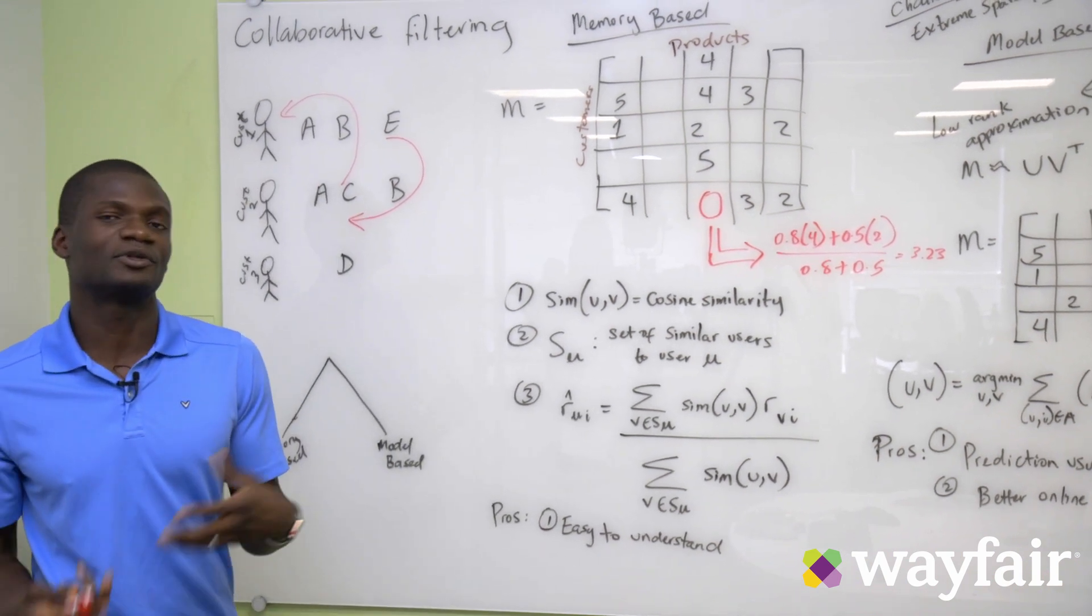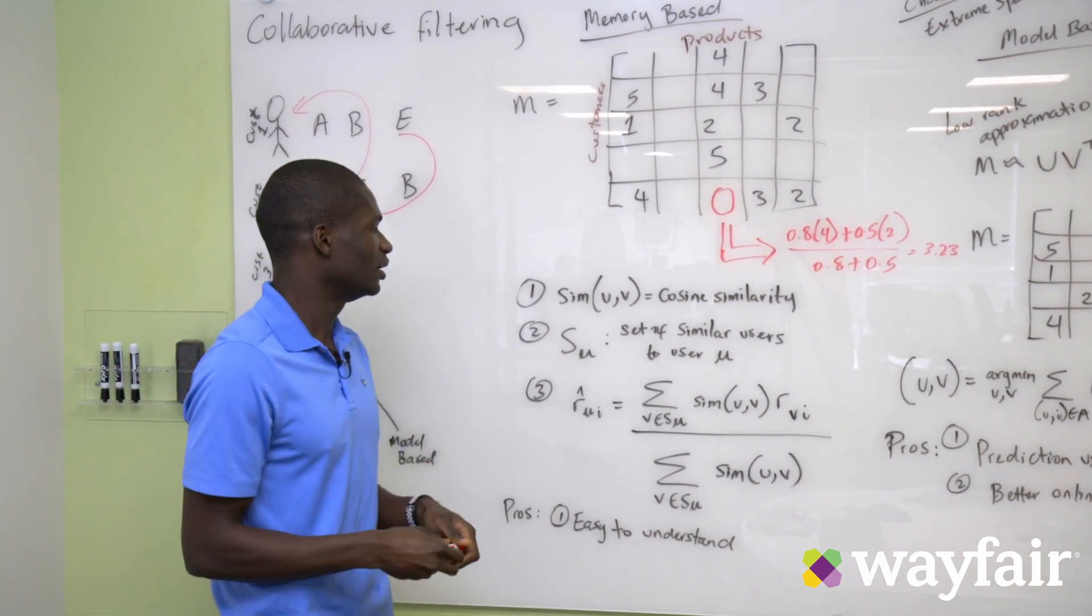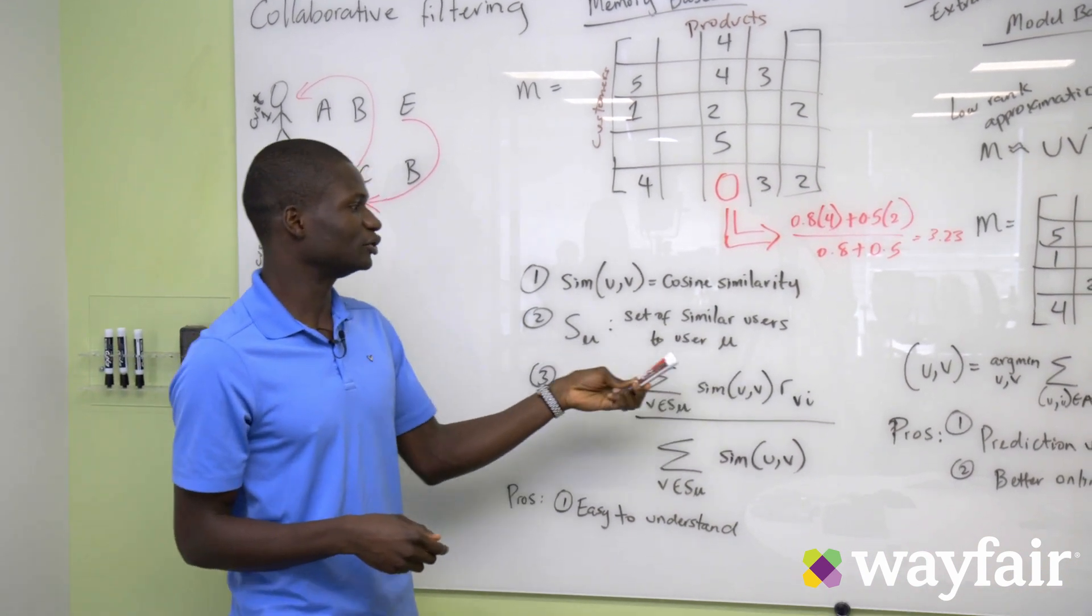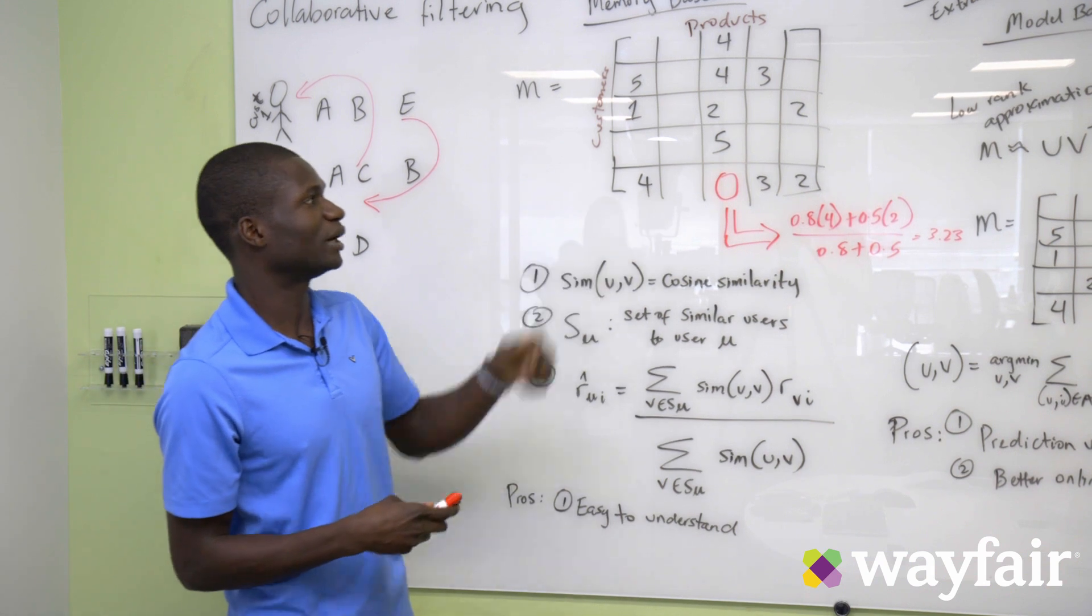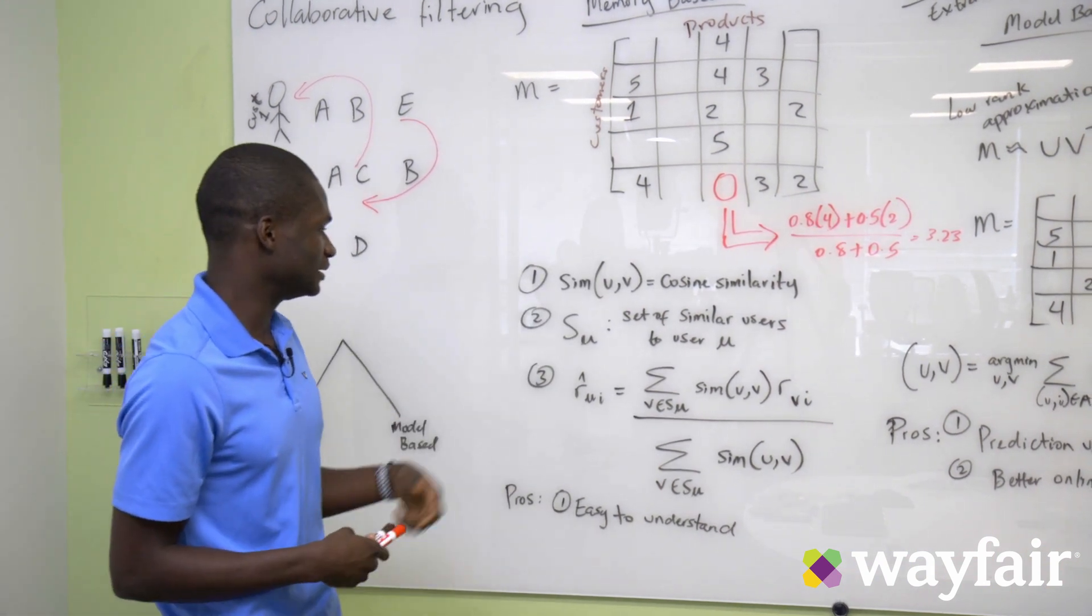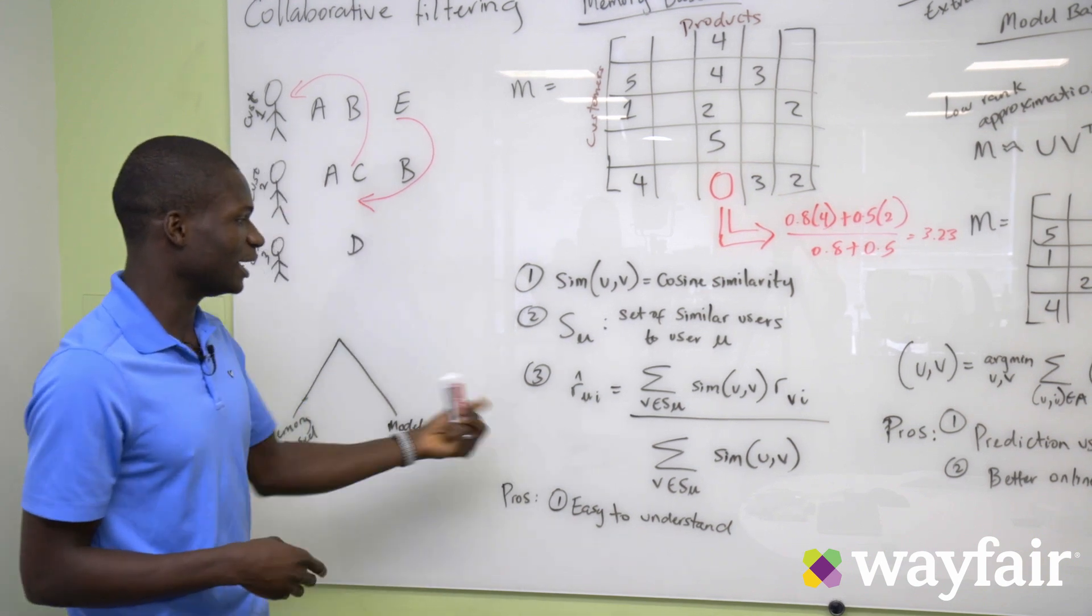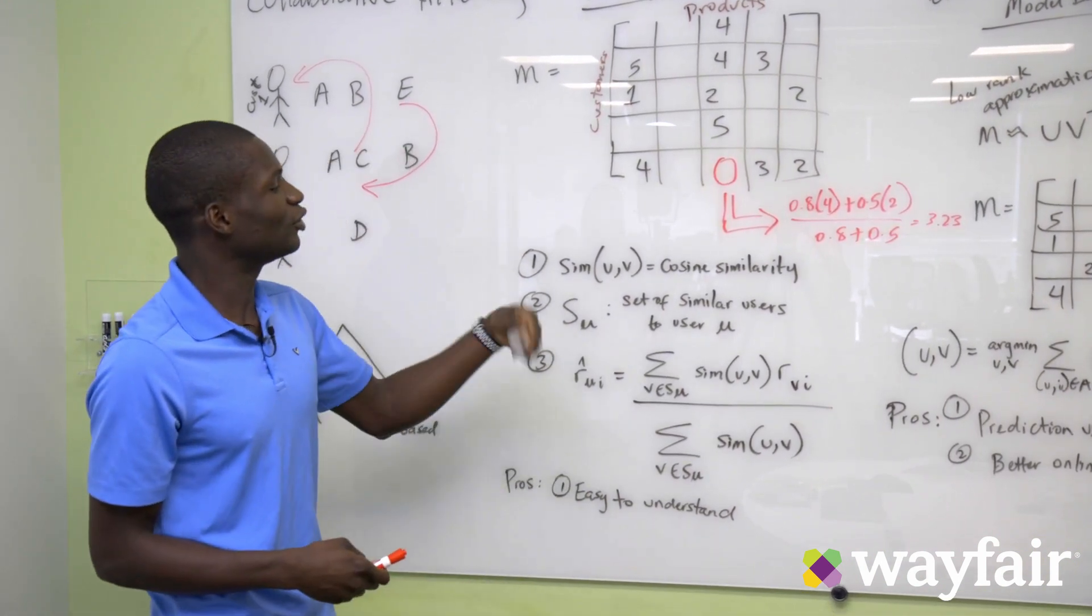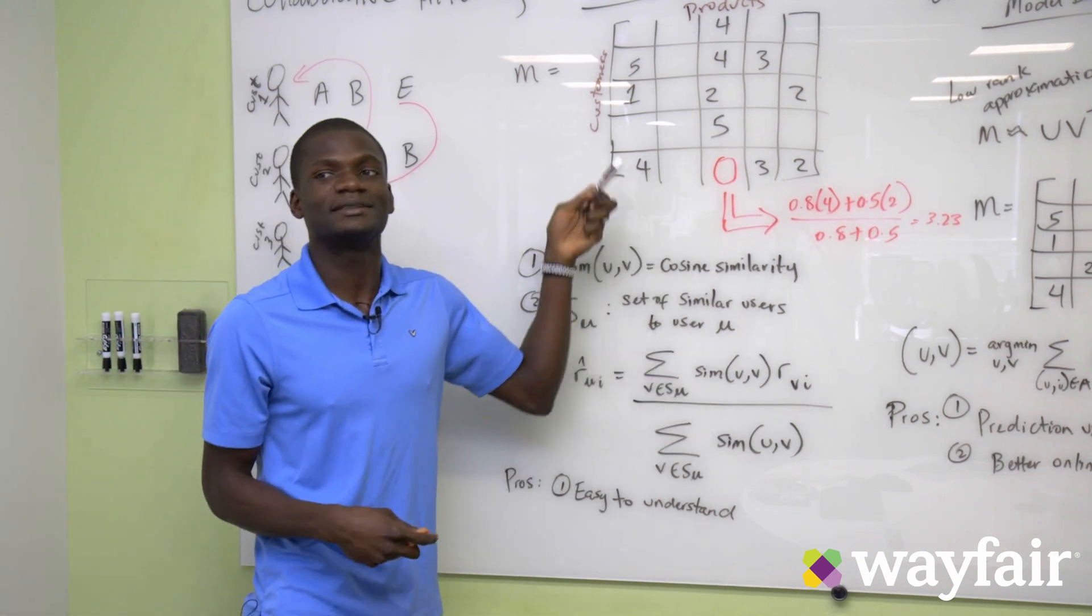After defining how similar one customer is from another, the second step is we could find a set of similar customers to the customer that we are trying to make a prediction on. And after we find the set, the third step is we could then get some kind of weighted average of the rating that those similar customers have rated the same item.